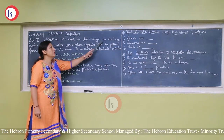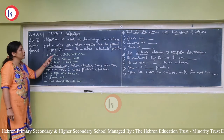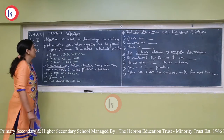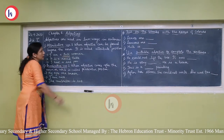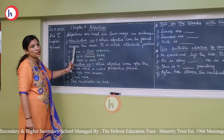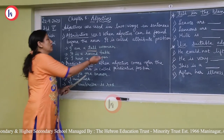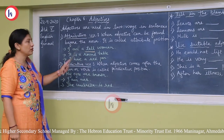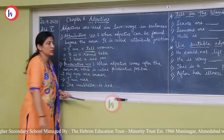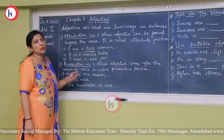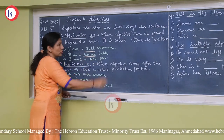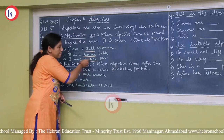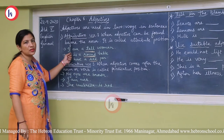Adjectives are used in two ways in sentences. First is the attributive case — when the adjective is found before the noun, it is called attributive position. For example, 'I am a tall woman' — 'tall' is the adjective and it comes before the noun 'woman,' so it is attributive. 'It is a round table' — 'round' comes before the noun 'table,' so that is attributive. 'I have a red pen' — 'red' comes before the noun 'pen,' so that is also attributive.